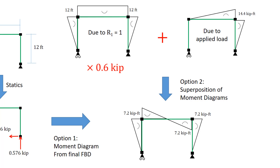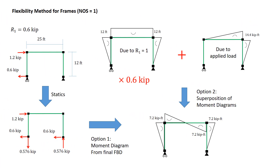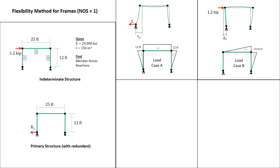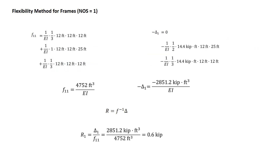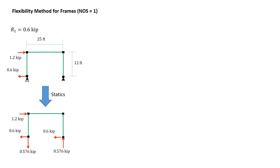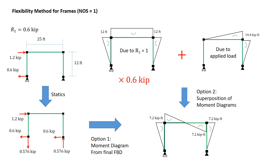That is the procedure for applying the flexibility method to frames. For the applied load and for the redundant with value of 1, we computed moment diagrams. We used those to compute the flexibility factors F and delta by virtual work. We used r equals f inverse delta to get the redundant force R1, interpreted the result physically, computed all other reactions by statics, and obtained the final moment diagram via two options. A later complication will be the same procedure but with larger degree of indeterminacy, working in matrix formulation instead of scalar — but the basic calculations won't change for any frame of any size.